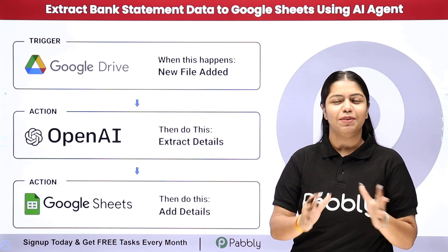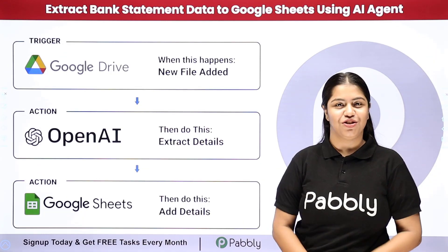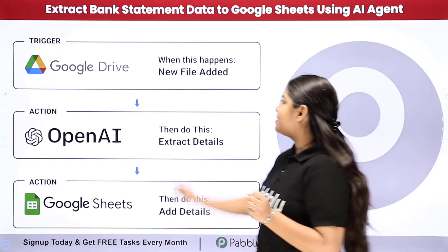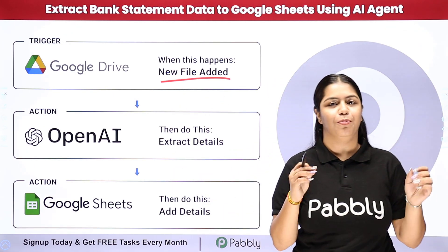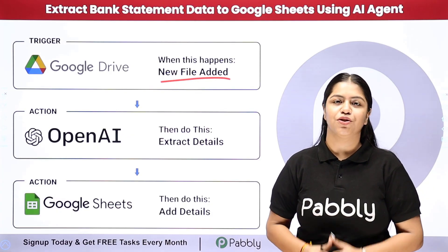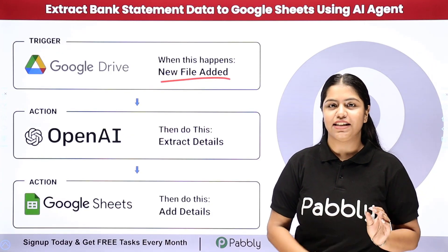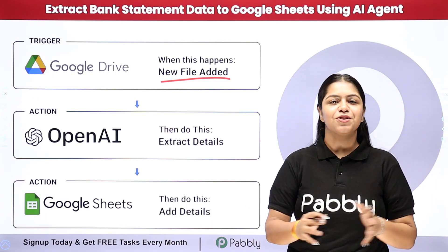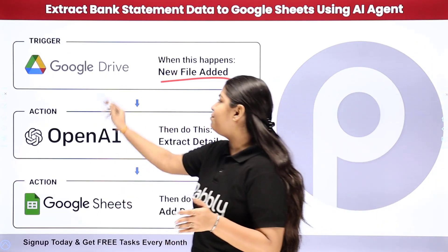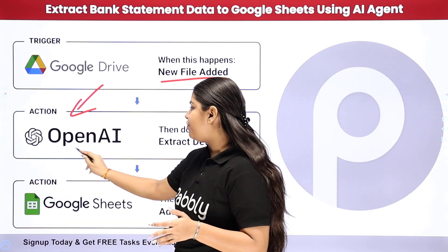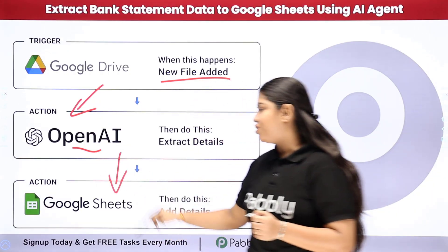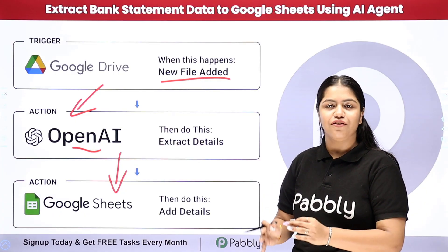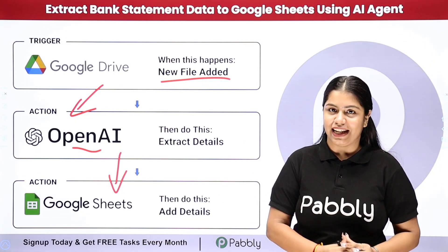To solve this problem, I have created this amazing automation. As soon as I add the bank statement into my Google Drive, my AI agent is going to extract the details from that bank statement and add them into Google Sheets. To do this, we are simply going to create a connection between Google Drive, my AI agent which is OpenAI, and Google Sheets — and to create this connection without knowing any programming or coding language, we are going to use Pabbly Connect.